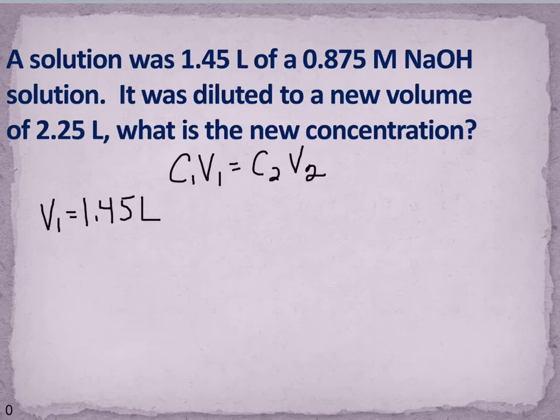Now note that these two numbers go together. In this case they're written close together in the problem. That's not always the case. Make sure you read the problem carefully and from the context of the problem determine which information goes together. So now I have C1 equals 0.875 molar because those two pieces of information go together. I continue to read.